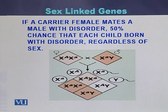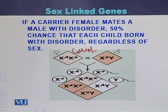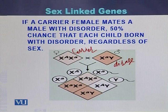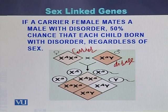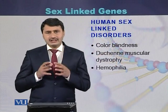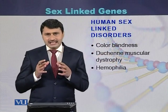The third example of sex linked gene inheritance is when a carrier female mates with a male that has the disorder. In a cross between a carrier female and an affected male, each child born to this couple will be affected regardless of sex — either the daughters will be affected with the disease or the sons will be affected. There are many diseases in humans which are called sex linked disorders.